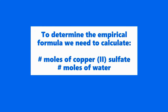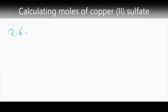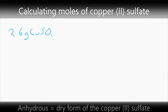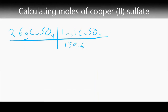To determine the empirical formula, it is necessary to calculate the number of moles of copper sulfate and the number of moles of water. The number of moles of copper sulfate is based on the mass of the anhydrous form of the salt, which was 2.6 grams. This value is converted to moles by dividing by 159.61 grams, the molar mass of CuSO4, giving 0.0163 moles of copper sulfate.